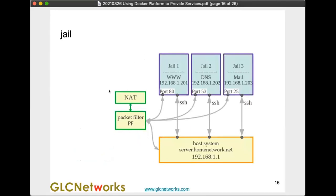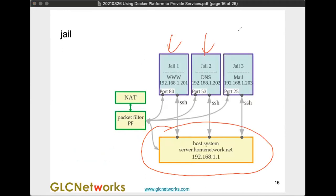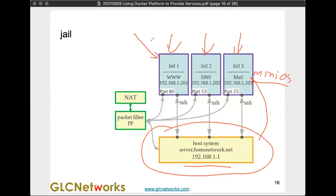Here's an example of FreeBSD jail. You have the host OS, and on top of that you create containers. Each container has its own space — its own /etc, its own /home — like a mini operating system. They emulate a small version of the host OS. The key benefit is isolation: a hacked container cannot access other jails — they're completely isolated.